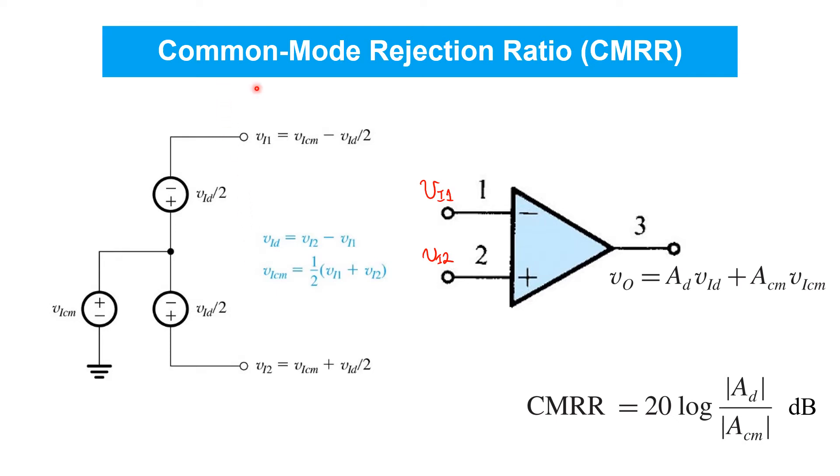We define the common mode rejection ratio of a differential amplifier as the ratio of the amplifier's differential gain, AD, to its common mode gain, ACM. That is, we expect the output to depend on both node voltages in general, so we can write it as being proportional to the differential input with a gain AD, and the common mode input with a gain ACM.